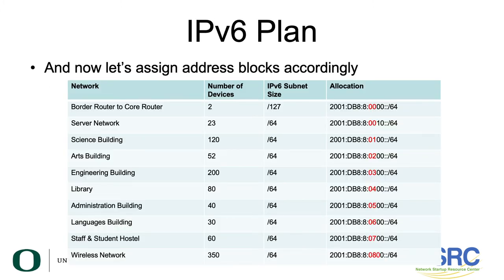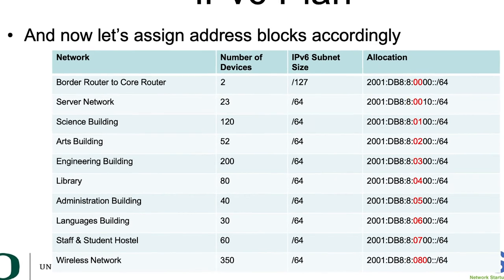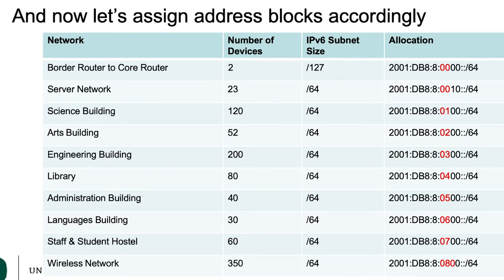Now let's assign the address blocks. We're reserving a /56 for campus network infrastructure, covering the border-router-to-core-router link and the server network. Using the XXYY template, the first assignment is the border-to-core router point-to-point link: 2001:DB8:8:0000::/64. Then we assign the server network the prefix 2001:DB8:8:0001::/64. Remember that the border-to-core router and the server network are within the same /56 prefix.